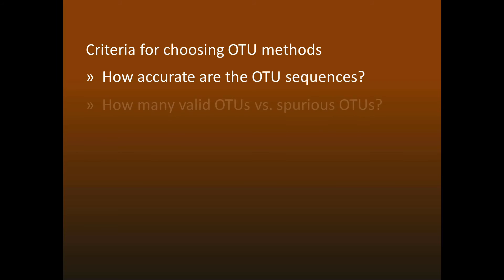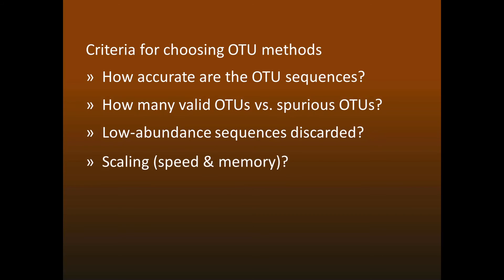To increase confidence in your analyses, I suggest trying different OTU methods and checking whether they give consistent results. So which OTU methods should you use? Here are the most important criteria for choosing an OTU method. How accurate are the OTU sequences? How many of the OTUs are valid rather than experimental error? How many low-abundance sequences are discarded? And how does the method scale to many samples and many reads? There are currently only three methods which consistently have highly accurate sequences on mock community tests. The denoisers, DADA2 and UNOISE, and the UPARSE algorithm for generating 97% OTUs. UNOISE and UPARSE are implemented in the uSearch package.